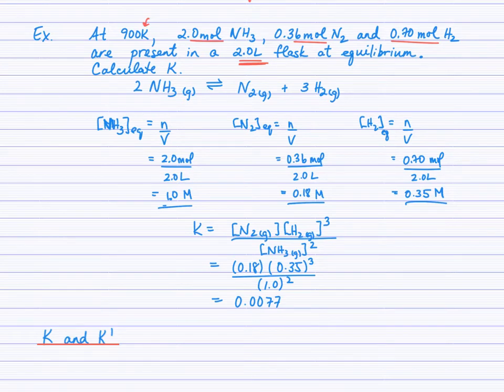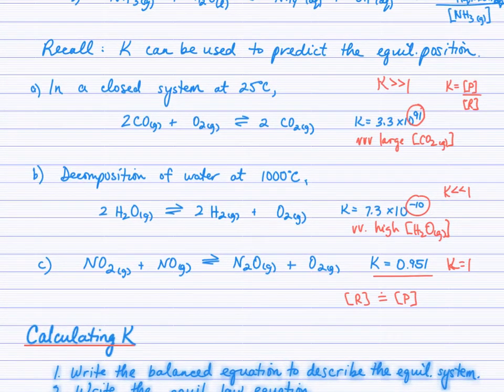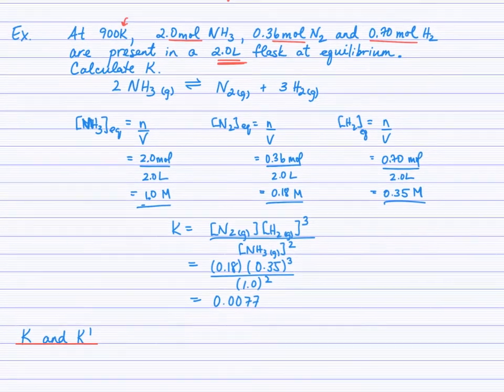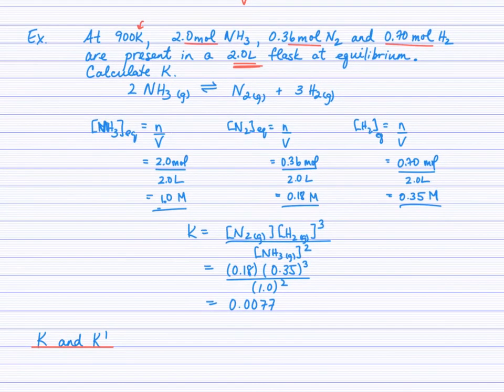Now, just to comment about units. K, we do not write the units for K. The value of K is significant because of its size, because of its magnitude. You'll recall what we did up here when we interpreted the size of K and what that told us about the concentrations of reactants and products. So sometimes those moles per liter would cancel out and sometimes they wouldn't. But we never write units for the equilibrium law constant because it's the magnitude of that number that is significant for us.